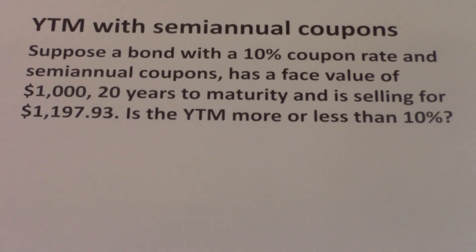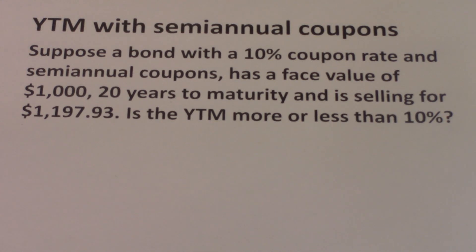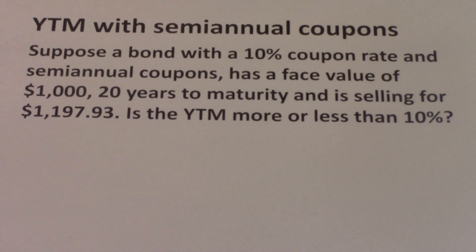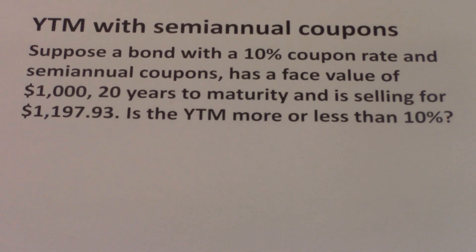Suppose a bond with a 10% coupon rate and semi-annual coupons has a face value of $1,000, 20 years to maturity, and is selling for $1,197.93. Is the yield to maturity more or less than 10%? We're also going to try to determine the yield to maturity.